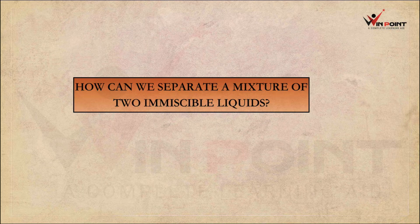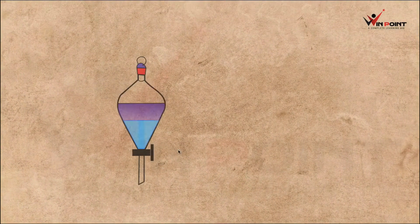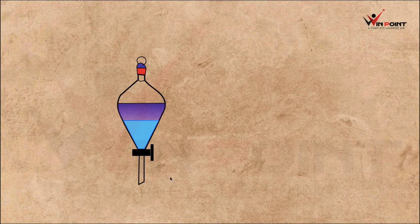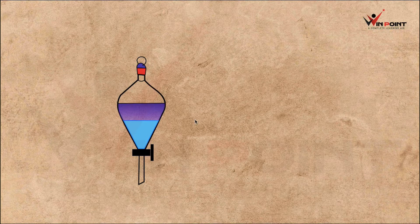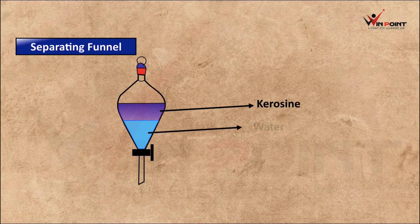For this kind of liquids, we use a separating funnel. The separating funnel consists of a tap, and here we can fill the mixture. We are taking the mixture of kerosene and water. Kerosene has less density compared to water, so it will float on the surface of water.